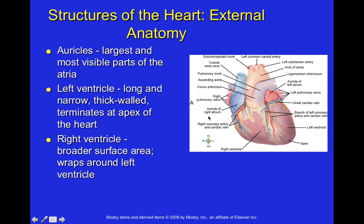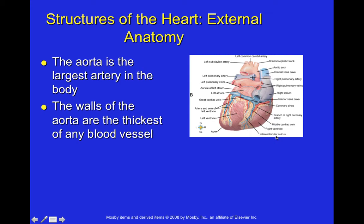On the external heart, the auricles are the largest and most visible parts of the atria. The left ventricle is long, narrow, and has the thickest wall of the heart, terminating at the apex. It must push oxygenated blood throughout the entire body, whereas the right ventricle only needs to push blood to the nearby lungs. The right ventricle has a broader surface and wraps around the left ventricle. The aorta is the largest artery in the body with the thickest vessel walls.